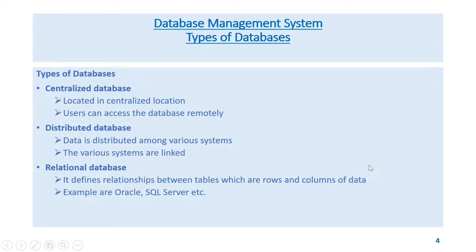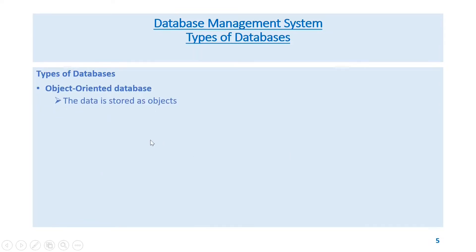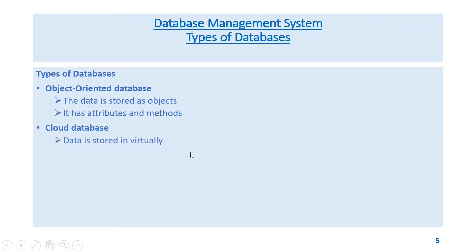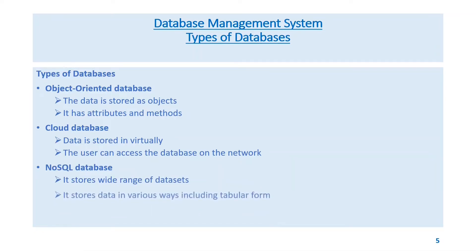Examples of relational databases are Oracle, SQL Server, etc. Object-oriented database — data is stored as objects; it has attributes and methods. Cloud database — data is stored virtually, and the user can access the database over the network.